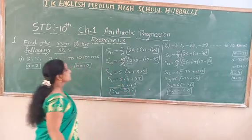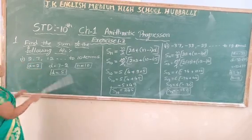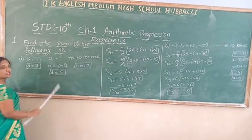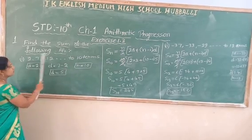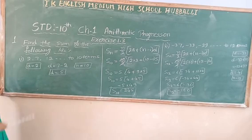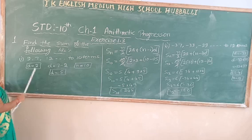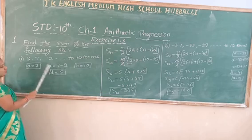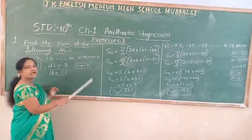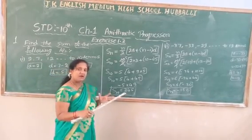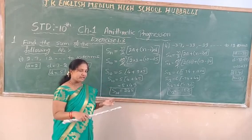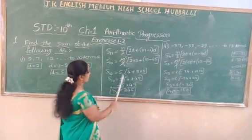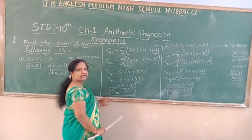Let me repeat. They gave the AP 2, 7, 12 and we find the sum of 10 terms. From the AP, first term value is 2, D value by subtracting second term minus first term is 5, N value is 10. We use the formula Sn equals n by 2 into 2a plus n minus 1 into d, substituting all the values, and we get 245.